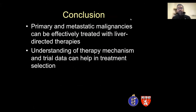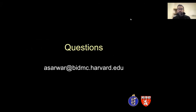In conclusion, primary and metastatic malignancies can be effectively treated with liver-directed therapies. It's important to understand the mechanism of each therapy as well as available trial data to help select the optimal treatment for each patient. Thank you very much.